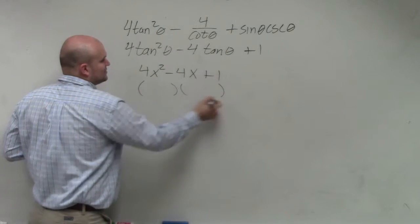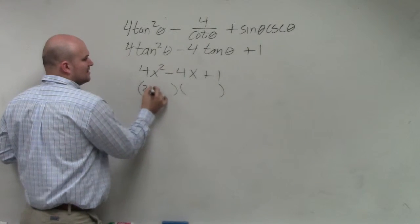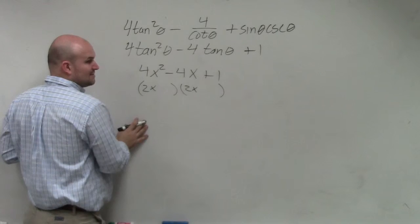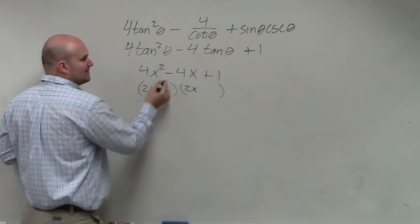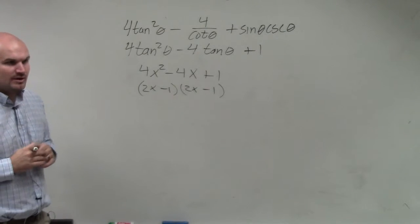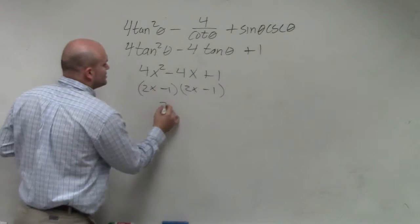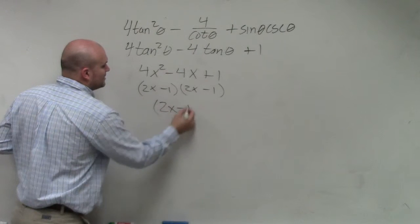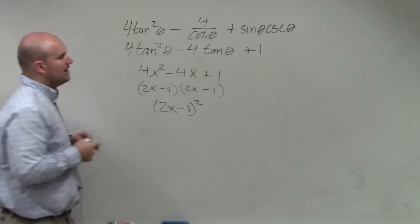If you guys look at this, I know that the first two terms have to multiply to give me 4x squared. I'm going to decide 2x and 2x. They both have to give me 1, but then add to give me negative 4x. So I see this as the factored form of 2x minus 1. So that can be written as 2x minus 1 squared, right?